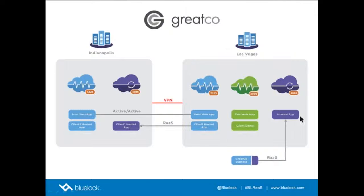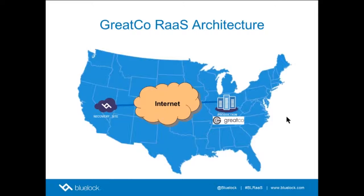Looking at this in more detail, GreatCo is using things in both our Indianapolis and Las Vegas locations. Using recovery-as-a-service, they're able to replicate internal applications into the cloud, into a BlueLock 4-series virtual data center, and protect them. If anything happens to the vSphere environment, they can power up that environment and keep going. The replication runs over the Internet through a VPN tunnel, though you can also do it over MPLS or a point-to-point circuit. TW Telecom has a product called e-link that's more efficient — you only pay for what you use.